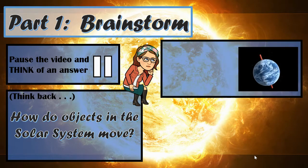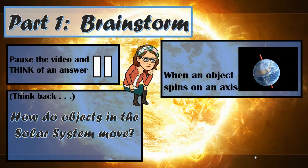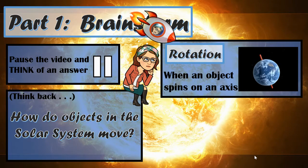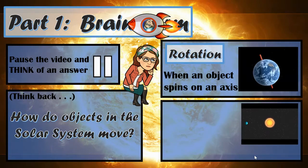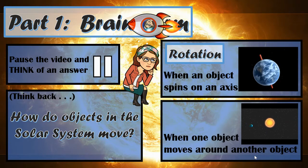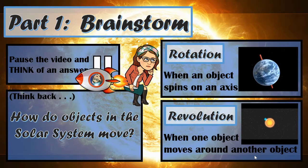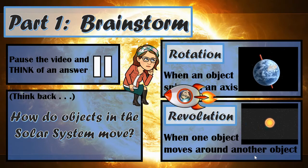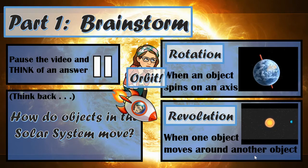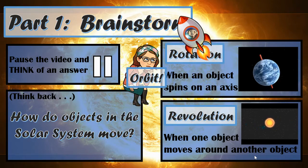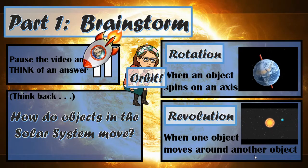If you thought of objects spinning as if they were on a pencil or a bar or something like that, then you thought of rotation. Rotation is when an object spins on its axis, just like this. You may have also thought of objects moving around each other — when one object moves around another object, this is called revolution. And if you manage to get the two of them going at the same time, well, then you have an orbit. An orbit is a combination of an object rotating and revolving at the same time.